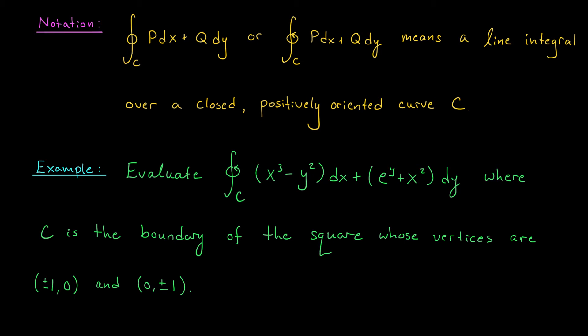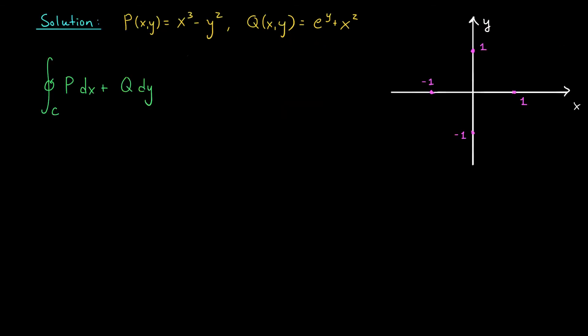Here, we're looking for the line integral along the curve C, C here is specifically going to be closed and positively oriented, of (x³ - y²)dx + (e^y + x²)dy, where C is the boundary of the square whose vertices are ±1,0 and 0,±1. So just as we did in the last example, we're going to start by drawing a picture. Our curve C is going to be a square passing through these four points. In addition, since our integral has this curved arrow through the middle, we know that we're giving this curve positive orientation. We're moving around the square in the counterclockwise direction.